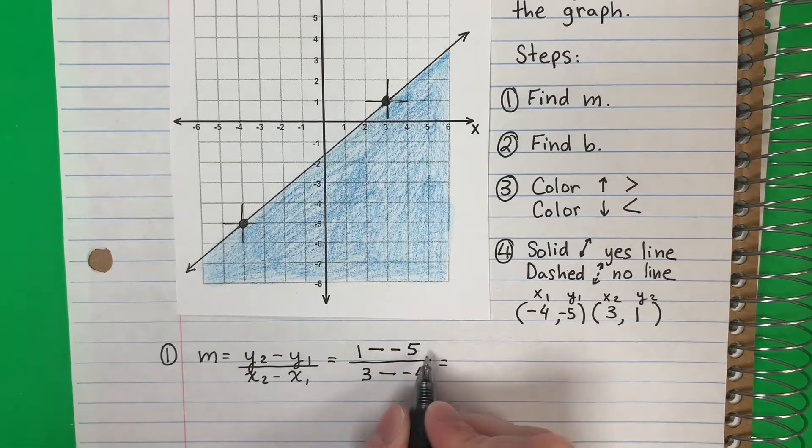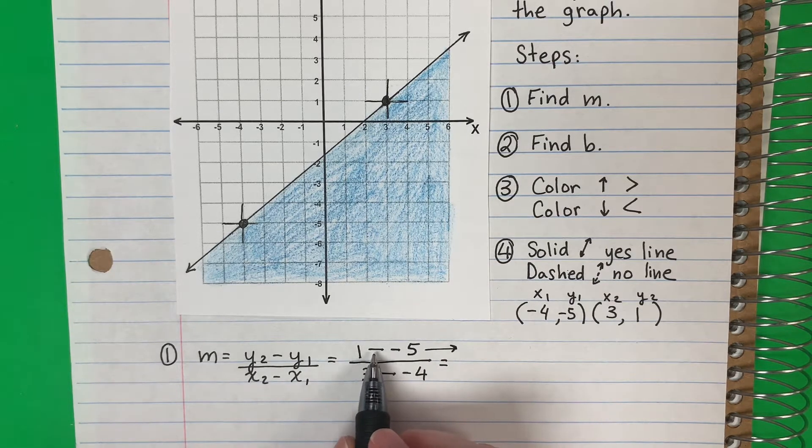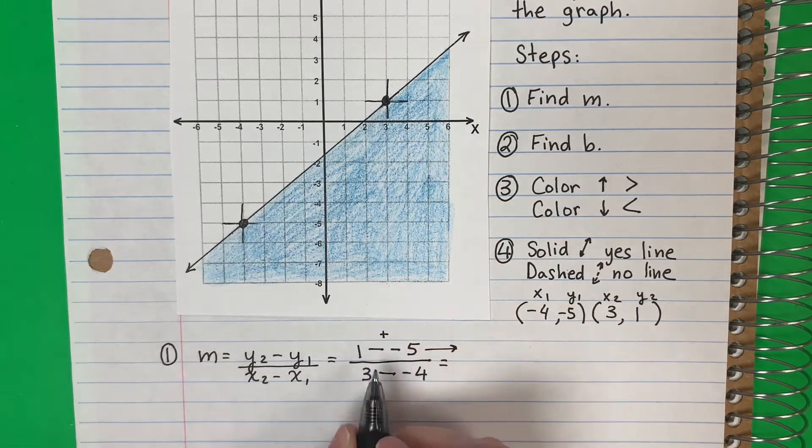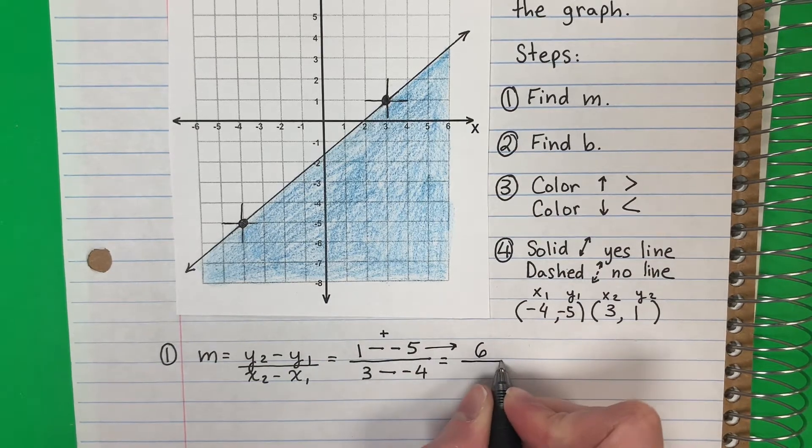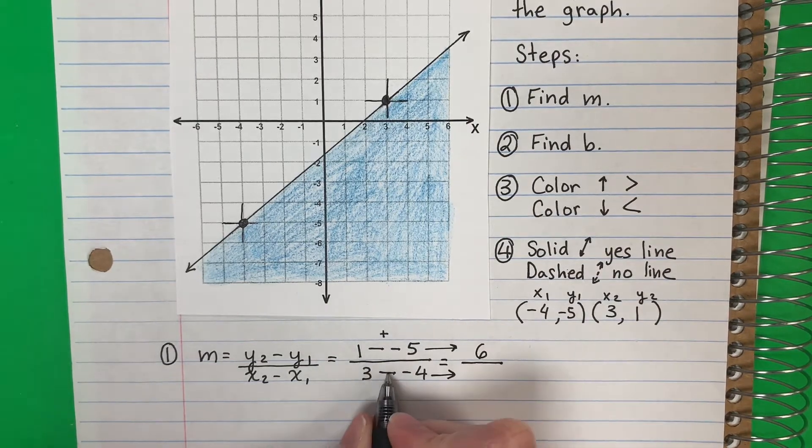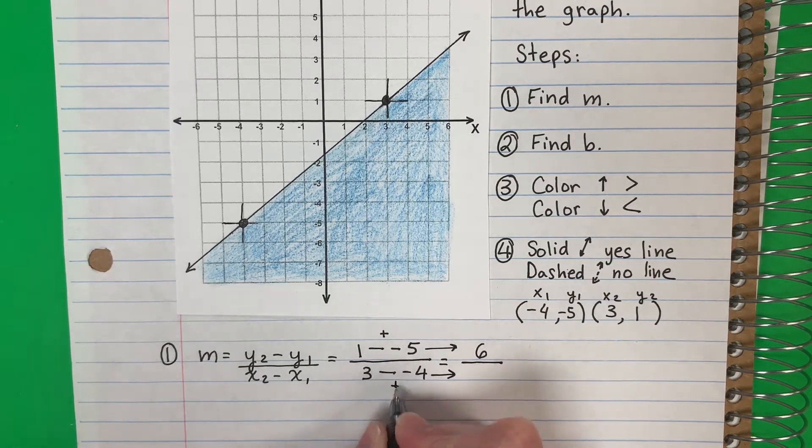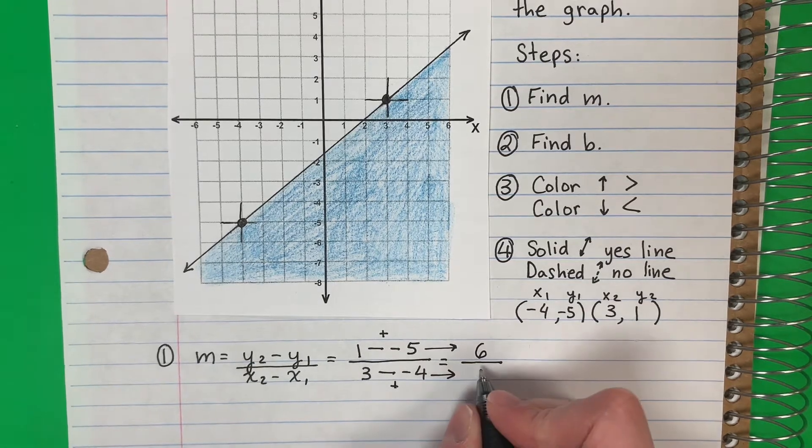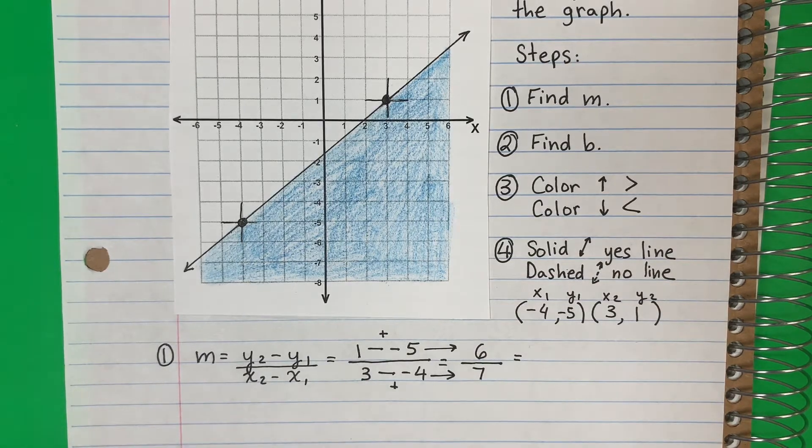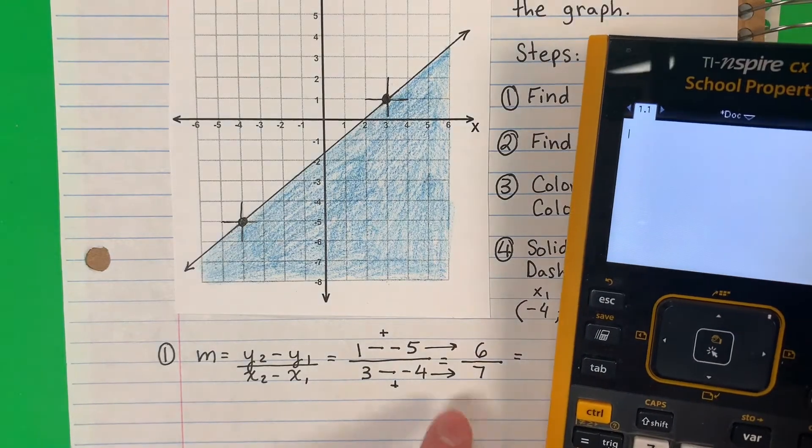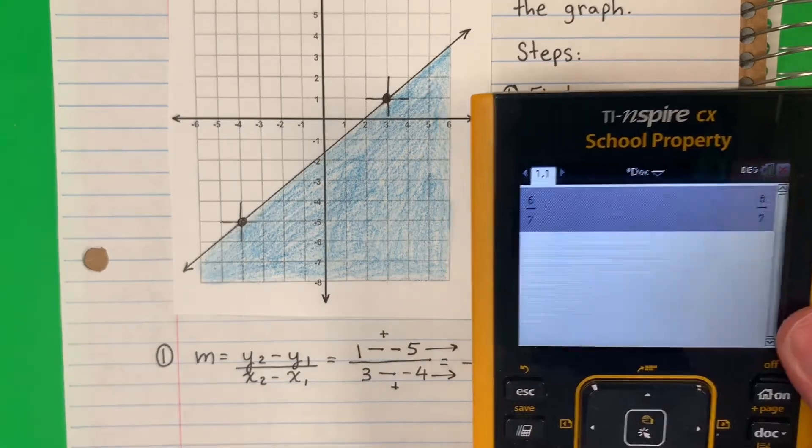First we're gonna do the numbers that are up. 1 minus minus 5 - minus minus is plus. Dos menos es más, so 1 plus 5 is 6. Copy the line, divide. Then down, 3 minus minus 4 - minus minus is plus. 3 plus 4, tres más cuatro, is 7. So now I'm gonna put all of this in the calculator: 6 divided by 7. It's the same, lo mismo. Six divided by seven. So this is my m slope.